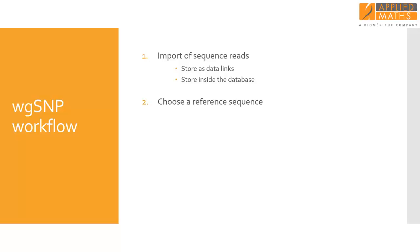Next, a reference sequence needs to be selected. The choice of a reference sequence in a whole genome SNP analysis is very important, since only genomic information that is in common between the reference sequence and the sample sequences will be included in the analysis. This means that the reference should be as similar as possible to the sample sequences.